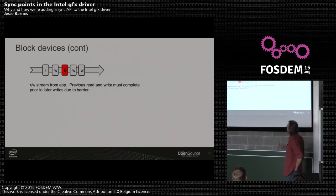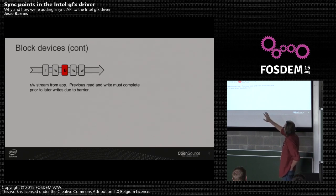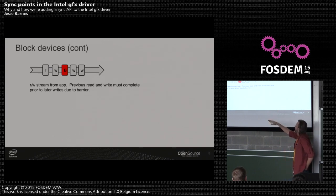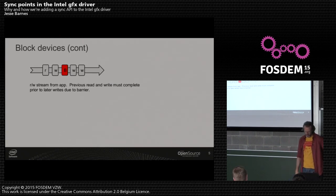Here's a really basic example. You've got a stream of I/O coming from your app — maybe some reads and writes, then a barrier inserted, then some writes. The barrier just ensures that those previous accesses have completed — like that write has landed on disk before you get to the next write. That's how you can guarantee some sort of atomicity and metadata consistency.